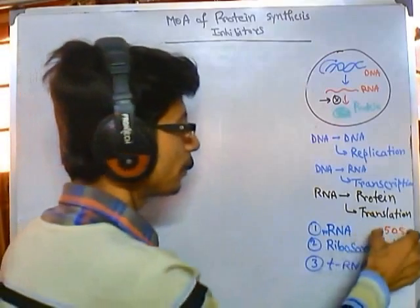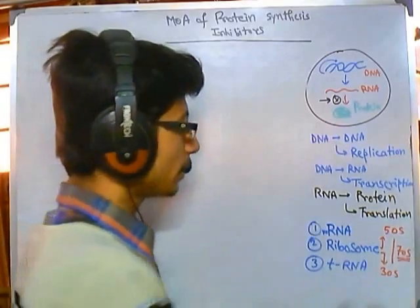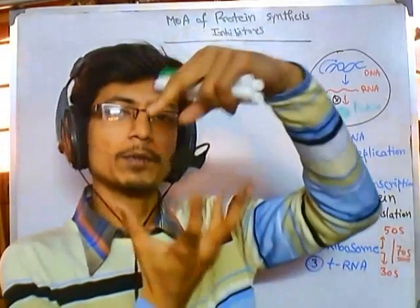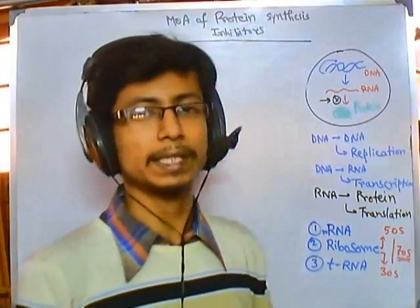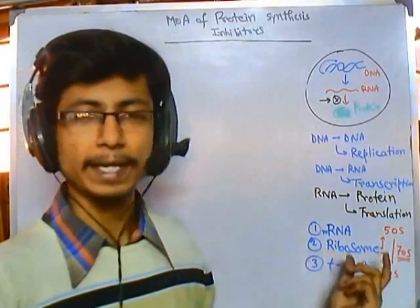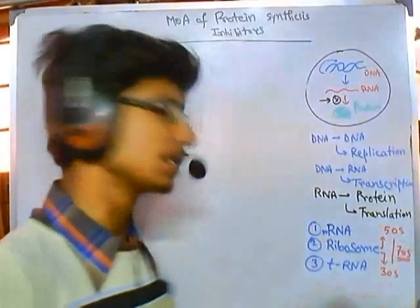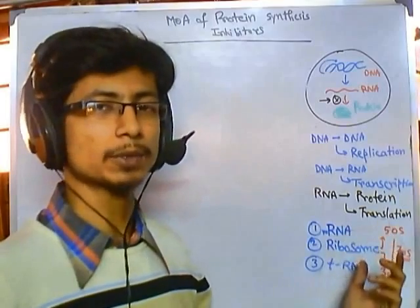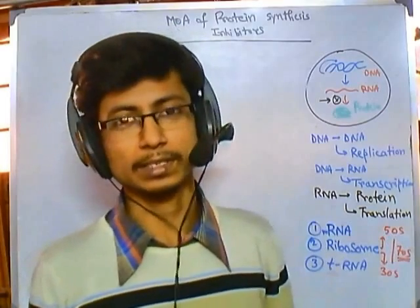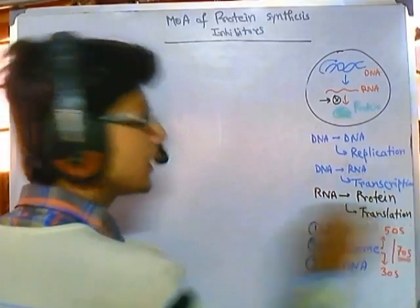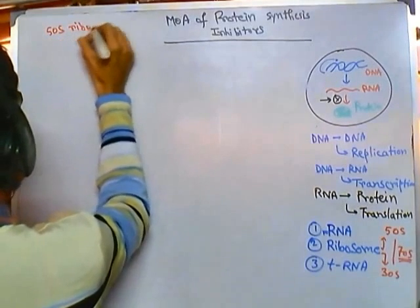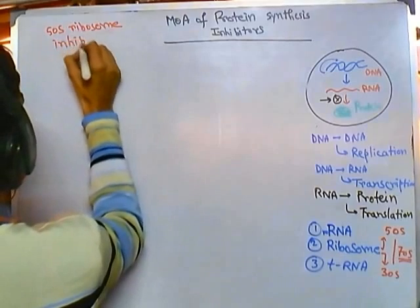Some antibiotics interfere with the activity of the 50s subunit of the ribosome, others interfere with the 30s subunit, and another type acts on the complete 70s ribosome. The protein synthesis process is blocked by inhibiting the machinery itself — the ribosome. Since mRNA is the workbench and tRNA is the carrier, blocking the ribosome blocks the whole process. In this video, we'll be talking about 50s ribosome inhibitors.